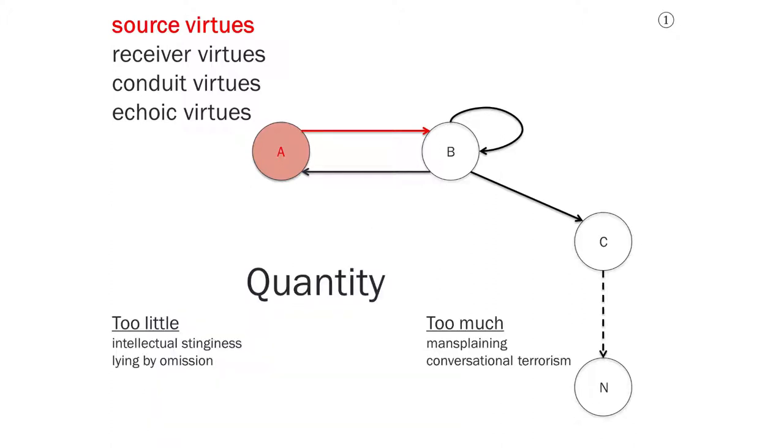The source virtue related to the maxim of quantity can be thought of in terms of the Aristotelian doctrine of the mean. According to this theory, many, if not all, virtues are a mean or an average between two vices, two bad ways of being. An example that Aristotle often uses is courage. He says that a courageous person is neither too confident nor not confident enough. That a courageous person fears neither too much nor too little. In terms of the maxim of quantity, we can think of the mean in terms of neither providing too much information nor providing too little information.